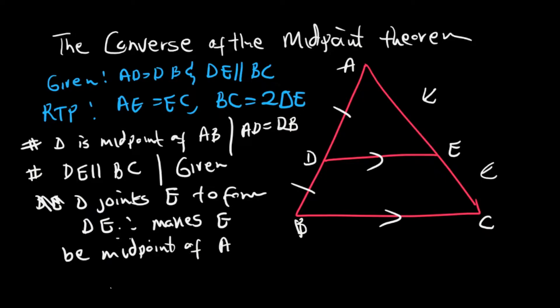Once E becomes the midpoint of AC, therefore AE is equal to EC. And once this is equal to this, therefore DE is equal to half BC, or BC is equal to twice DE.